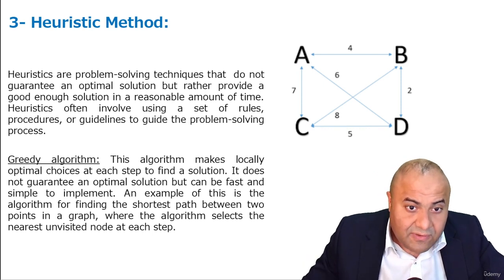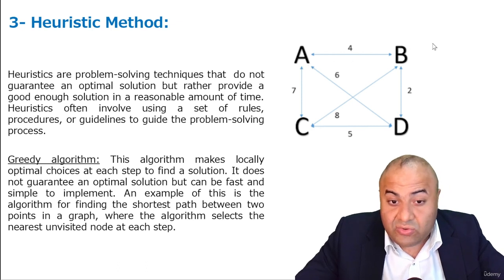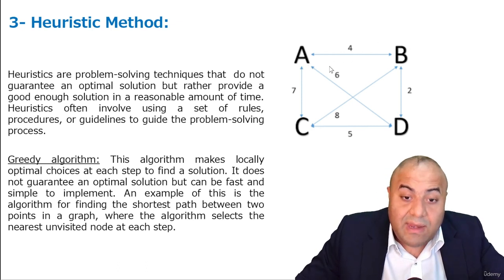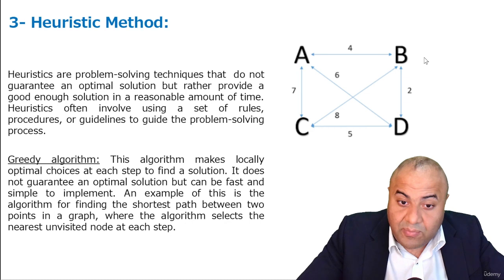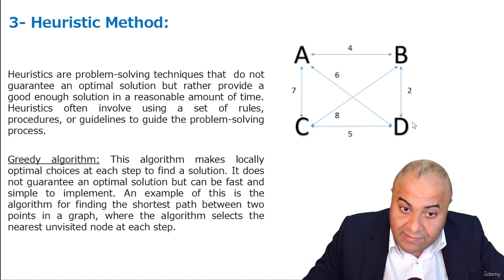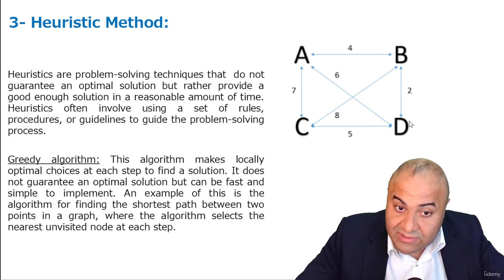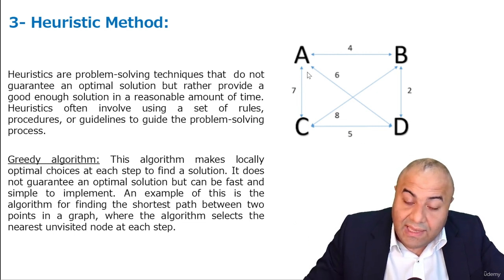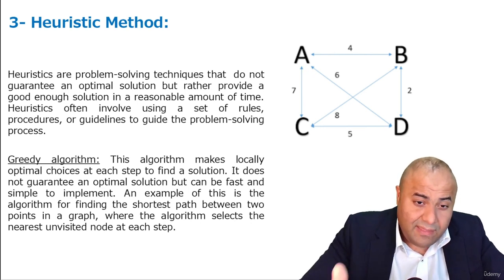We start from point A here, and then we go greedy. We choose the point with the minimum cost, which in this case is 4. And once we go to B, we also choose the point with the least cost. So we go for D, and then we also choose the point with the least cost, and then we go to C, and then we go back to A.